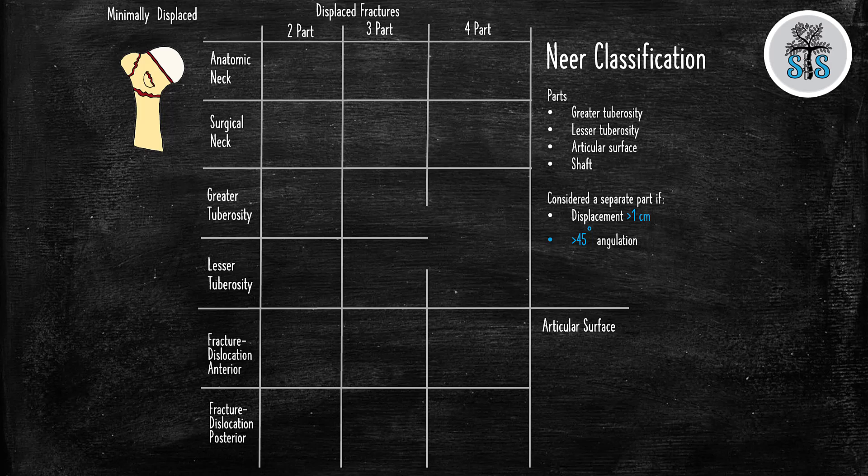First, there are the one-part minimally displaced fractures. Next, there's the two-part fractures. We're going to start with the anatomic neck fractures. So if there's a fracture line through it, it creates two parts. There's going to be the articular surface and the shaft. If it's through the surgical neck, you can have, through the greater tuberosity, the lesser tuberosity.